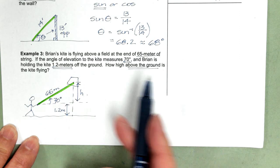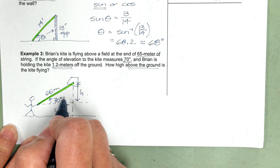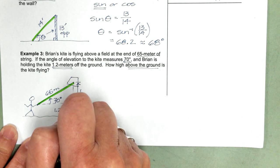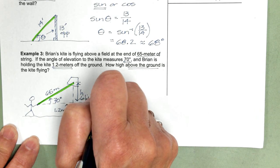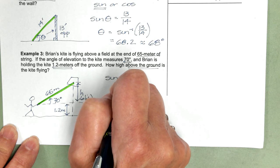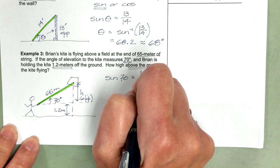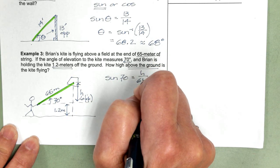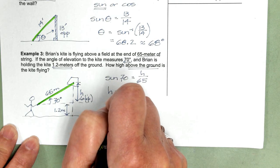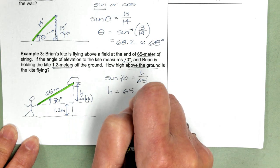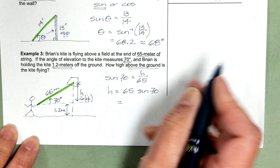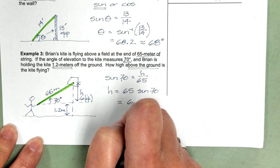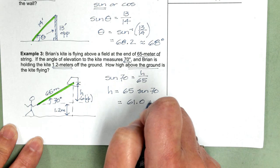So we have the hypotenuse, sine or cosine. We're looking for the opposite side. So we're going to use sine. Sine of 70 equals H over 65. That means H is equal to 65 times the sine of 70, which gives us 61.0 meters.